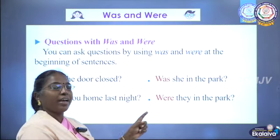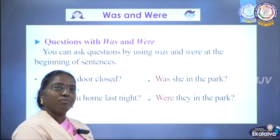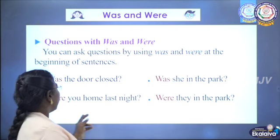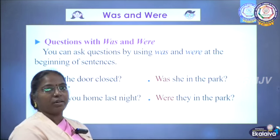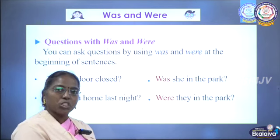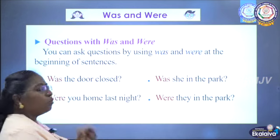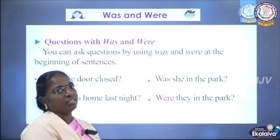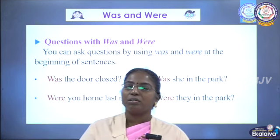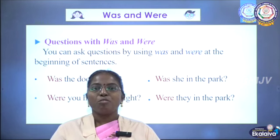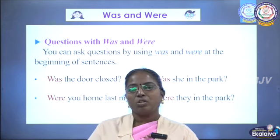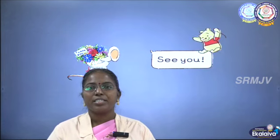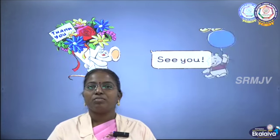Questions with was and were: you can ask questions by putting was or were at the beginning of the sentence. Was the door closed? Was she in the park? Were you home last night? Were they in the park? So now you understand how to use the linking verbs was and were — in present tense, past tense, negative sentences, and questions. Thank you children. To receive our online lessons, please press the subscribe button and you will receive the latest updates.